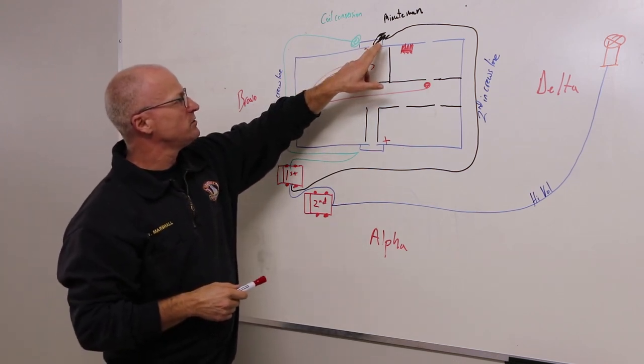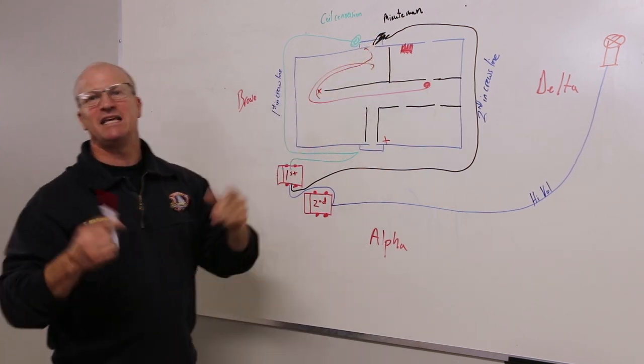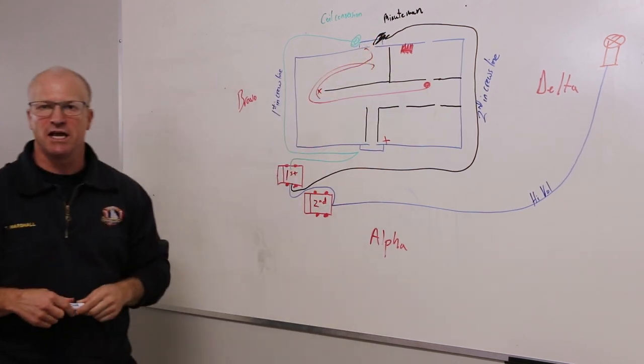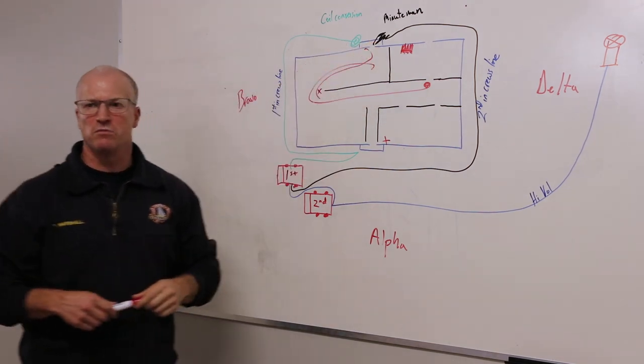The Minuteman, be aware too that you take the coupling and you take the nozzle and you put it at the door and that gives you 50 feet. So understand the difference between the 100 feet and the coil conversion and 50 feet with the Minuteman.